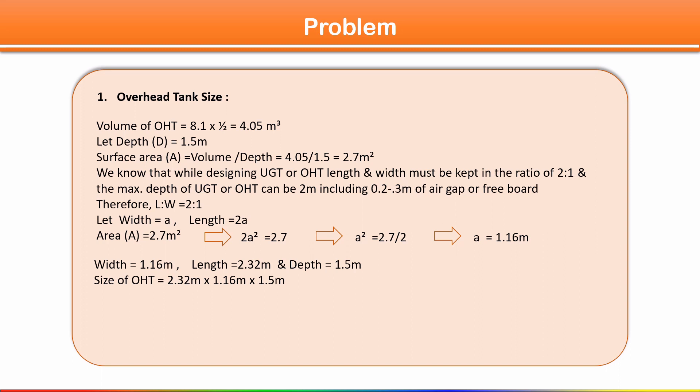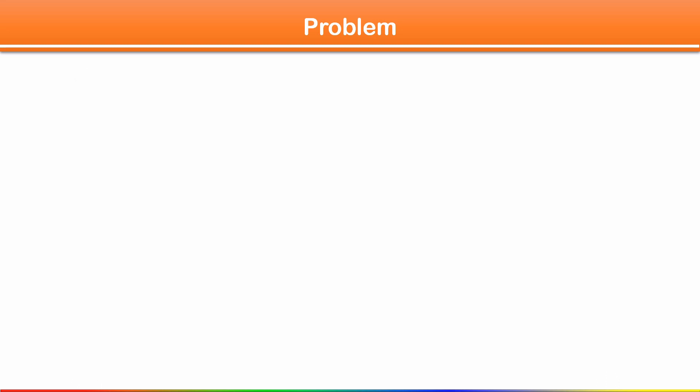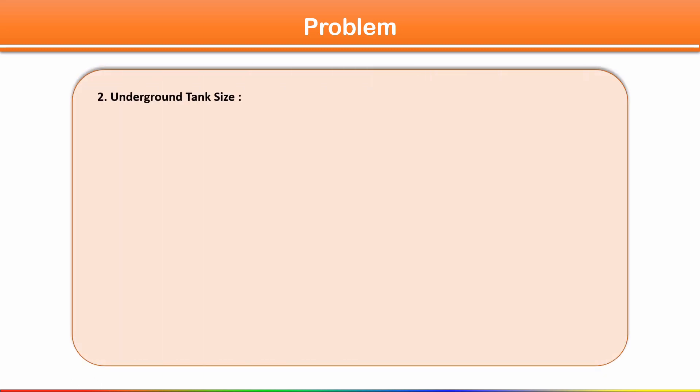The size of OHT is: length = 2.32 m, width = 1.16 m, depth = 1.5 m. Including freeboard of 0.2 m, the final size of OHT is: length = 2.32 m, width = 1.16 m, total depth = 1.7 m.